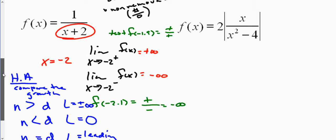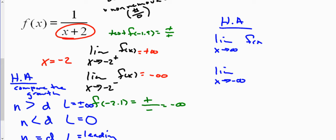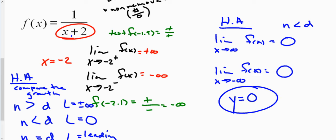So to find the horizontal asymptote, I'm going to take the limit as x goes to infinity and then as x goes to negative infinity for f(x) = 1/(x+2). The numerator degree is definitely less than the denominator degree. So as x gets larger, the denominator gets much larger and we're approaching zero. The same holds true for negative infinity — the denominator gets bigger, so we're approaching zero. Our horizontal asymptote is y = 0.